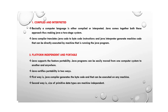Platform independent and portable: independent means it does not depend on any hardware, and portable means it can easily be moved from one computer system to another. Java programs can be easily moved from one computer system to another — this is called portability. Java certifies portability in two ways: first, the Java compiler generates bytecode instructions that can be executed on any machine; second, the size of primitive data types are machine independent.